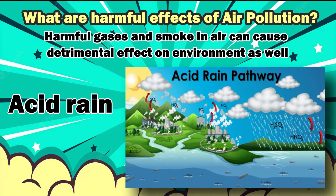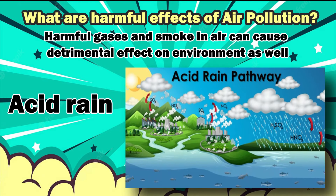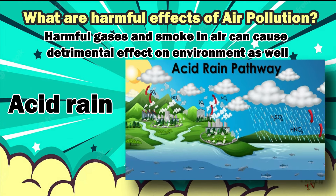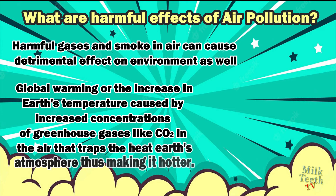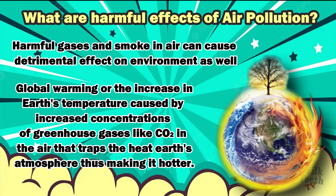Air pollution can also cause acid rain. Most importantly, air pollution has led to global warming — an increase in earth's temperature — caused by increased concentrations of greenhouse gases like carbon dioxide produced during combustion of fossil fuels. This leads to the trapping of heat in the earth's atmosphere, thus making it hotter.